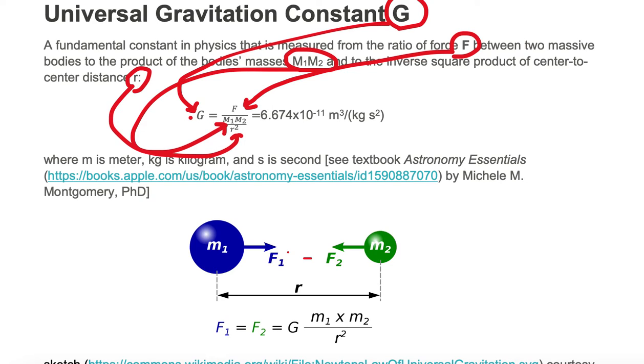In other words, G which is a measured quantity is equal to F divided by m1 times m2 divided by r squared. This measured quantity G is equal to 6.674 times 10 to the minus 11 m cubed divided by kg times s squared, where m is meters, kg is kilogram, and s is seconds.